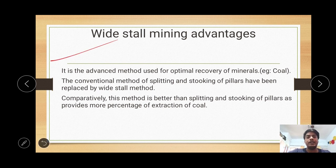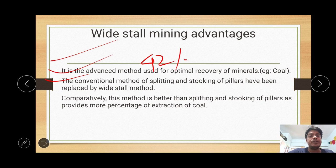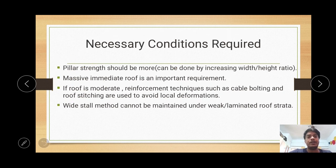What are the advantages of wide stall mining operations? The first advantage is optimum recovery of minerals — the percentage of extraction can be increased to about 42%, which is not possible with other partial extraction methods like splitting and stooking. The conventional method of splitting and stooking has been replaced by wide stall mining operations. In these cases, surface structures are protected and subsidence does not occur. Comparatively, this method is better than splitting and stooking as it provides a higher percentage of coal extraction.